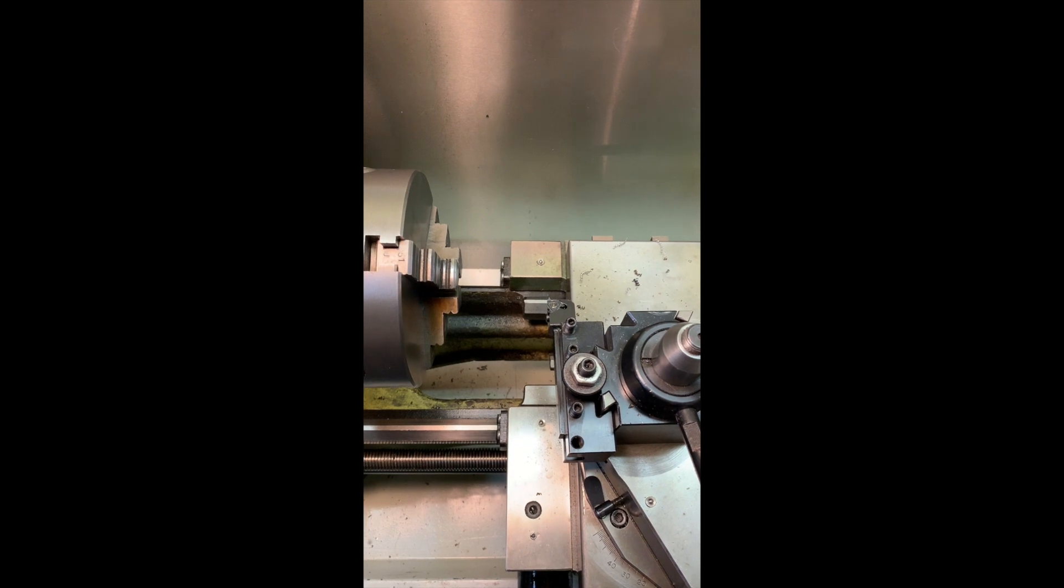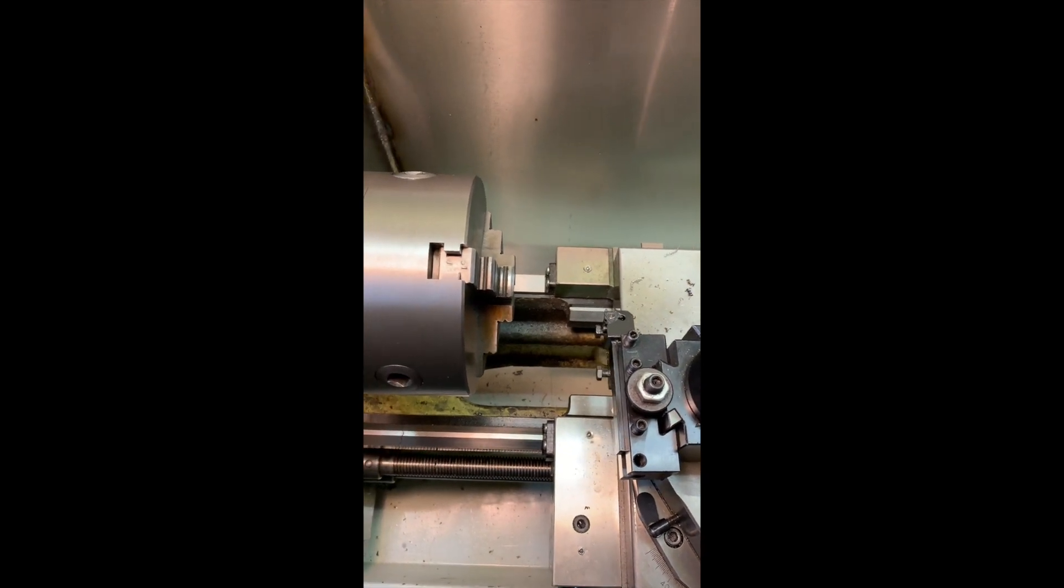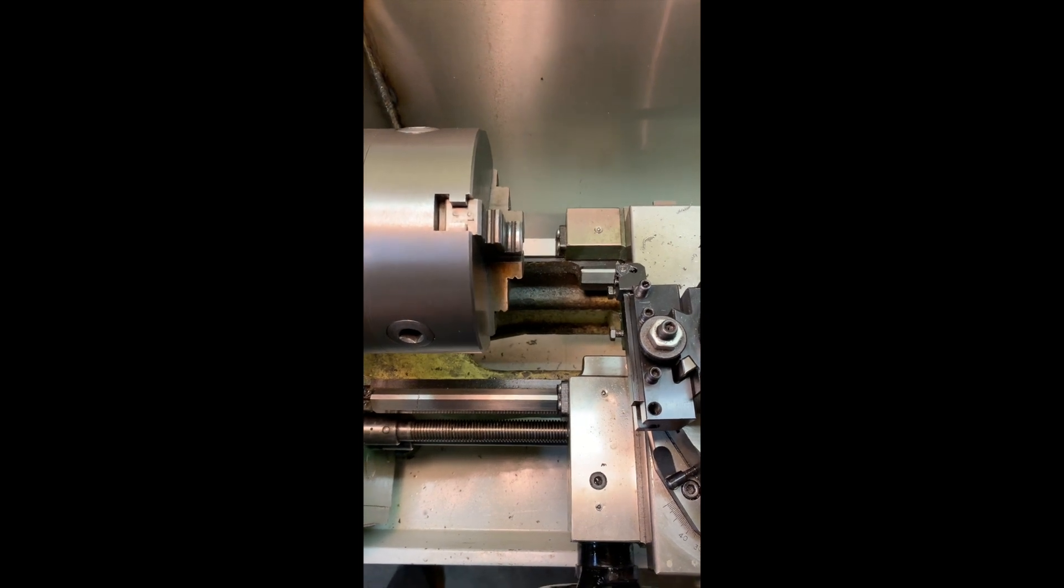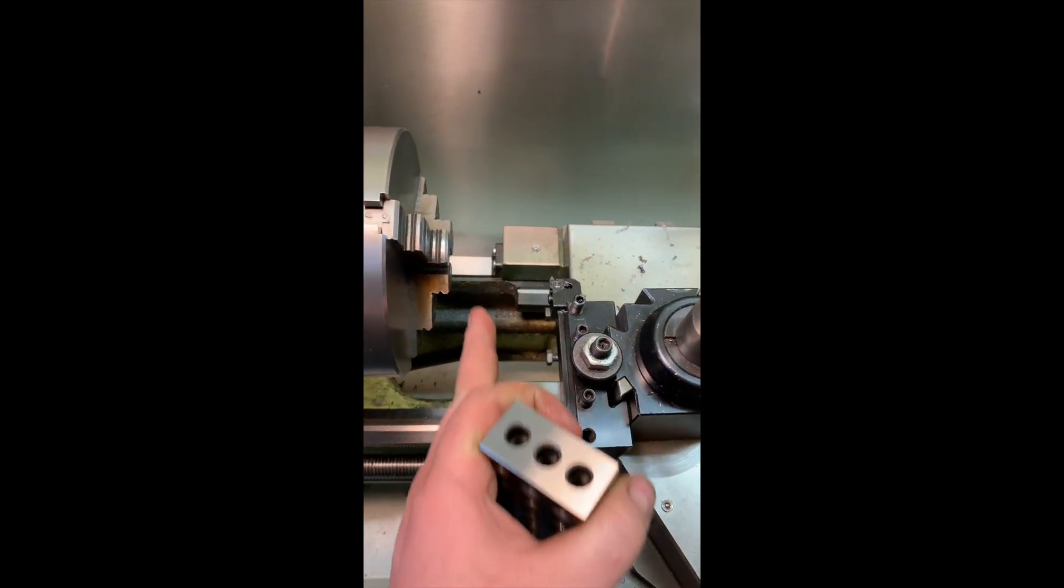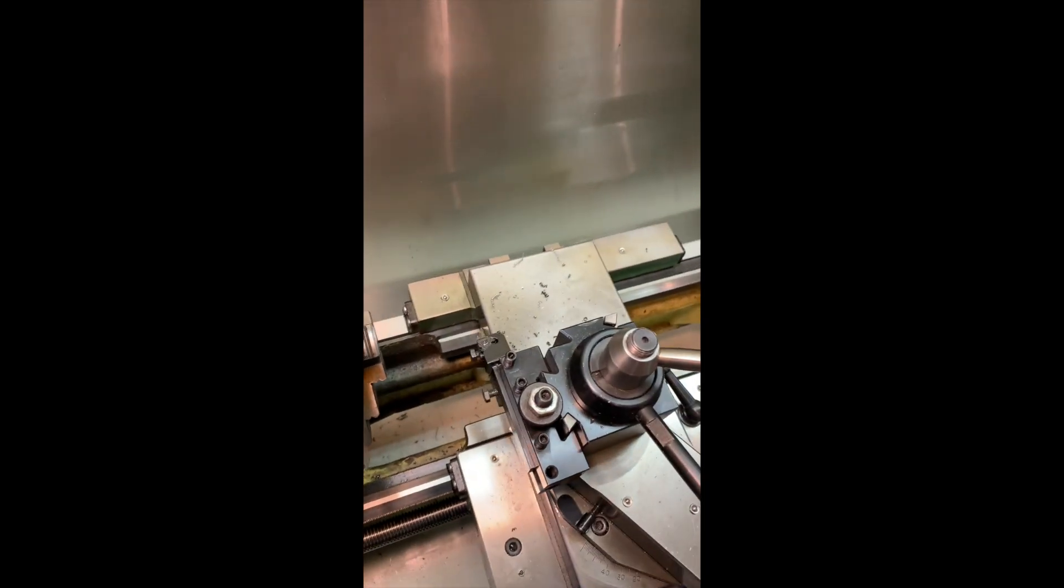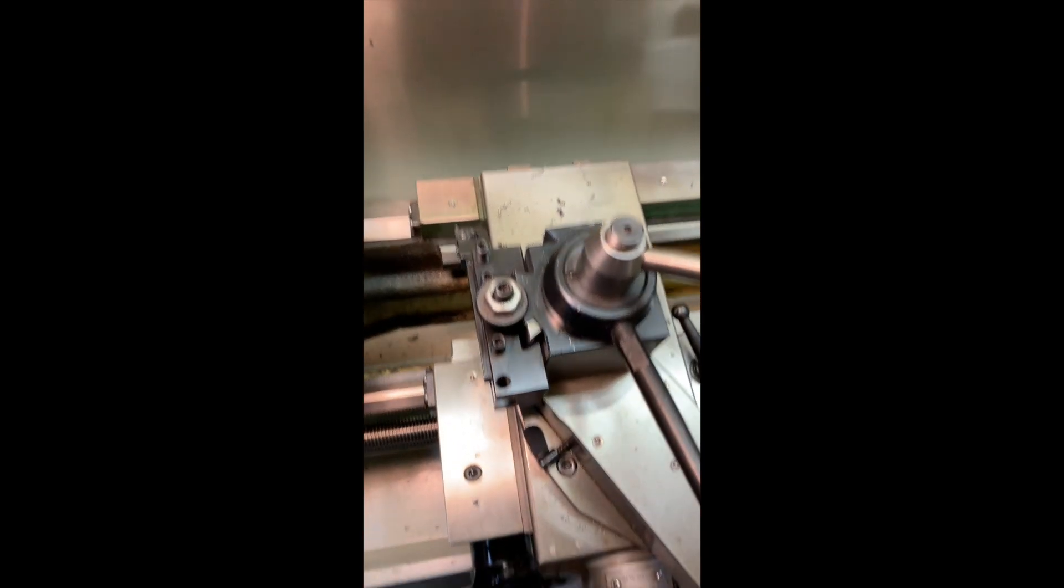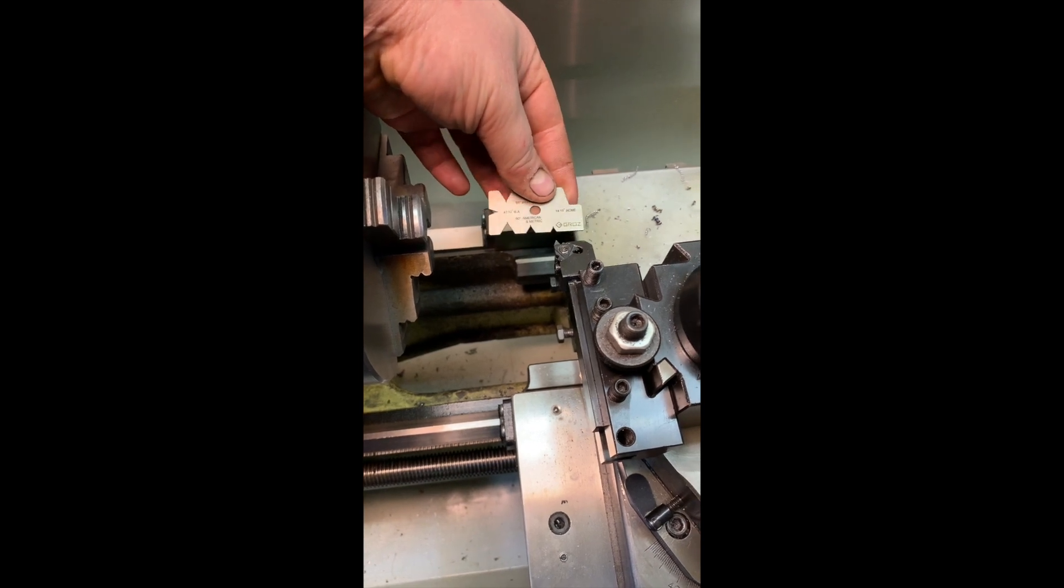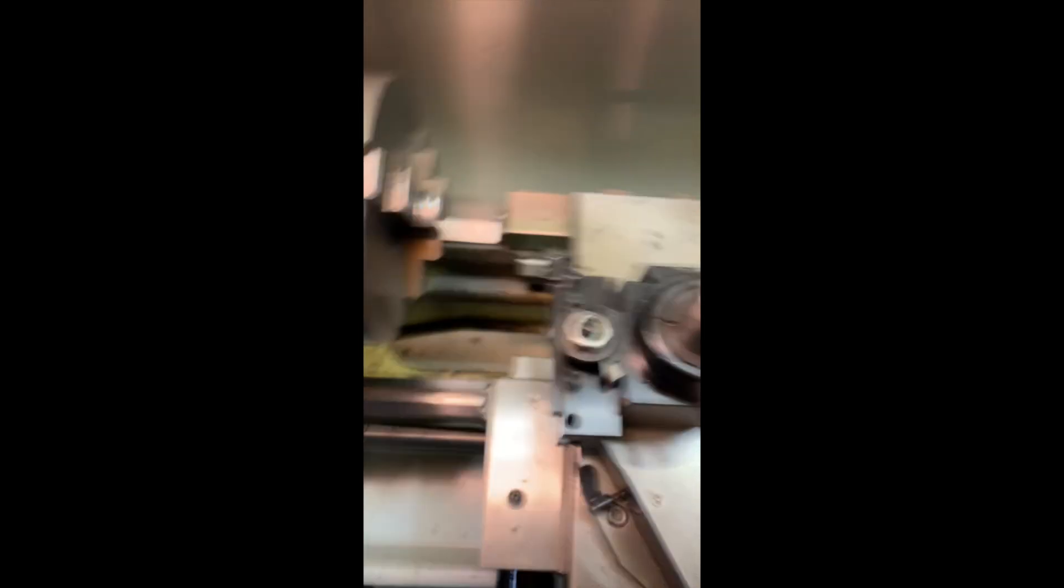Now, another neat trick I actually got off of BlondieHack's channel, which is really good, is you need to set up your threading bit parallel to the part, 90 degrees. Now, you can use a little fishtail, and you can try and get it in there like that, and get it straight against it. Which does work, and that is what they're for.